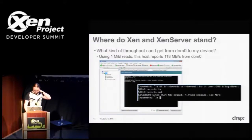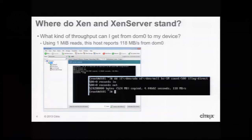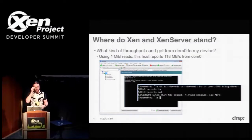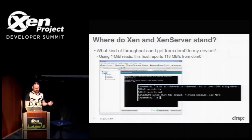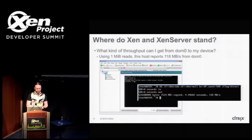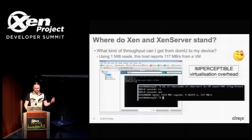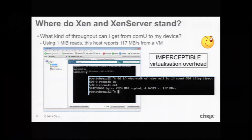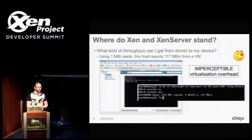One of the things I come across a lot is when people first install any kind of Xen environment and get a VM running, they go into DOM0 — for example a Xen Center DOM0 console — and do some sort of DD to observe throughput. It's a very simplistic test. Here I'm reading at about 118 megabytes a second. Then you do the same thing in your VM and get 117 megabytes a second. So it's all good, right?